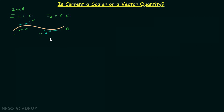One very important point from the previous lecture: whenever we perform any circuit analysis we always use conventional current. So whatever current is given while performing circuit analysis, it is always going to be conventional current. In the question it is given that 2 milliampere current is flowing through the wire — this makes 2 milliampere the conventional current. So I2 is equal to 2 milliampere. We can also reverse the direction of current by applying a negative sign.